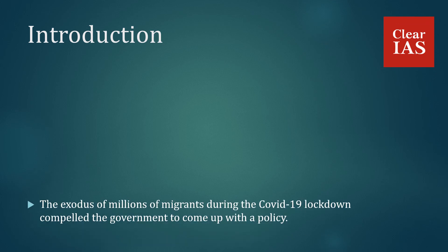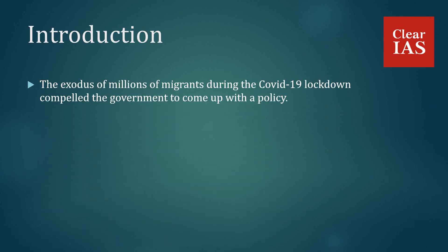Introduction: The exodus of millions of migrants during the COVID-19 lockdown compelled the government to come up with a policy. During the COVID-19 lockdown, a lot of migrant labour returned to their native towns on foot, and when the government was asked regarding the number of such migrant labour, it had no answer. Hence the government decided to come up with a policy for creating a central database of the number of migrant labourers and also to consider proposals for their welfare.